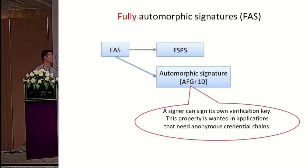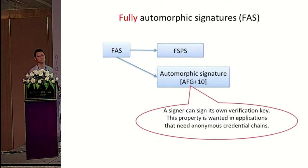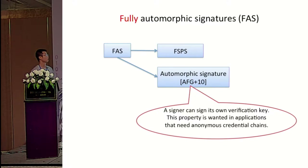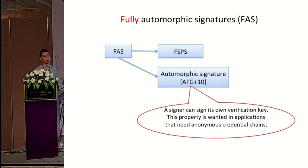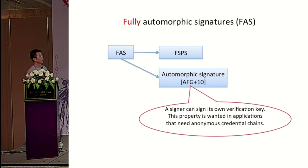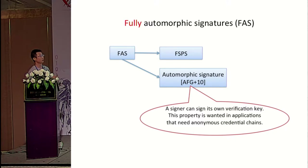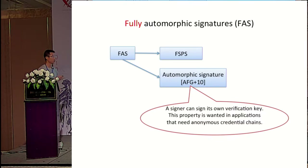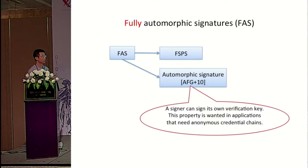In our paper, we also defined fully automorphic signatures. A signature scheme is said to be fully automorphic if it is fully structure-preserving and automorphic. Automorphic signatures allow a signer to sign its own verification key, and this property is needed in applications that require anonymous credential chains.